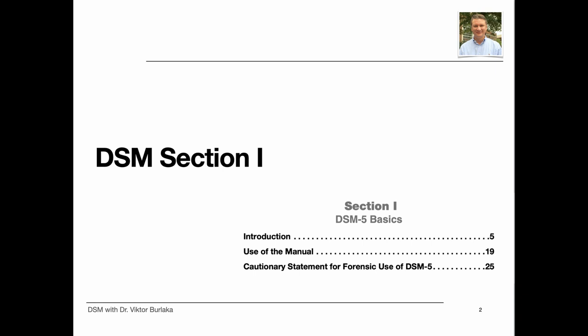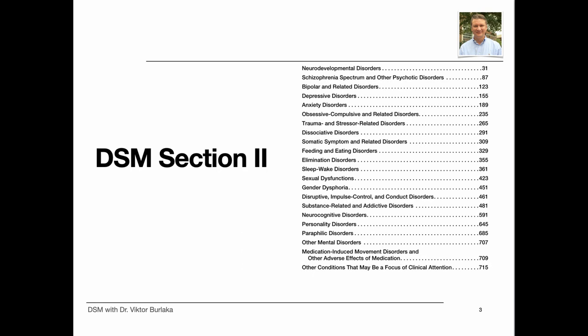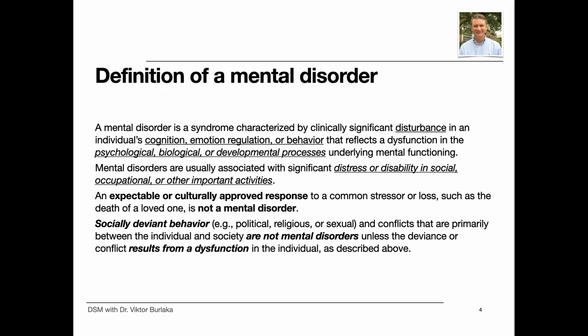What's included in the DSM? Section 1 introduces the reader to the manual and makes a cautionary statement for forensic use of DSM-5. Section 2 includes 22 chapters. The first 20 chapters describe disorders that must meet the definition of a mental disorder. That means they disturb a person's cognition, emotion regulation or behavior, and they are caused by an underlying psychological, biological or developmental process.